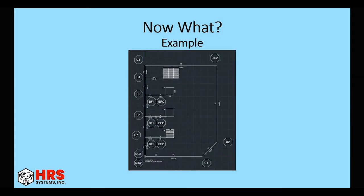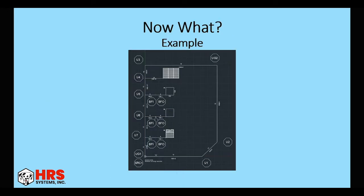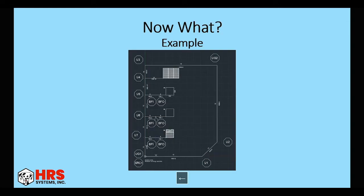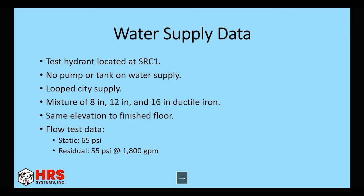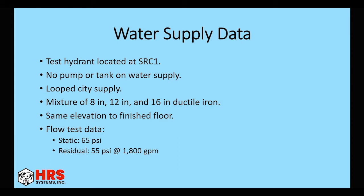So here's the floor plan we're going to be working with. So our test hydrant is located at SCR1, which is at the bottom left-hand corner. No pump or tank on the water supply. As you can see, it's looped. It's a mixture of 8-inch, 12-inch, and 16-inch ductile iron. And then to keep things simple, we're going to say the test hydrant is at the same elevation as the finished floor. Our flow test data, static 65, residual 55 at 1800 GPM.